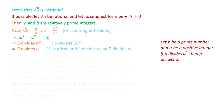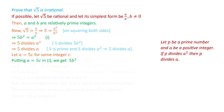If 5 divides a, it means there exists some integer c such that a equals 5 times c. Now, if we substitute a equals 5c into equation 1, the left-hand side is 5b squared and the right-hand side is a squared, which becomes 5c squared equals 25c squared. This implies that b squared equals 5c squared.